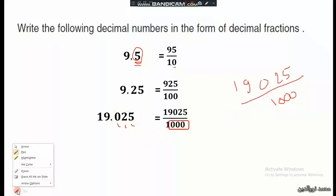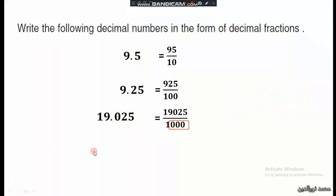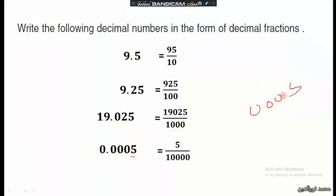Another example: if we have zero point zero zero zero five, the non-significant zeros don't count. We say five over how many zeros — four zeros — so ten thousand. It's five over ten thousand.